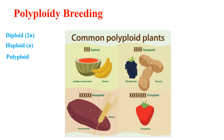Next is polyploidy breeding. Sexually reproducing organisms have two complete sets of chromosomes in their somatic cells — such cells are called diploid. Gametic cells have only one set of chromosomes and they are called haploid. An organism having more than two sets of chromosomes is called polyploid, and such a condition is called polyploidy.